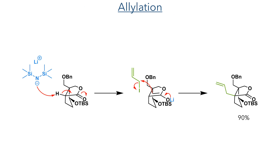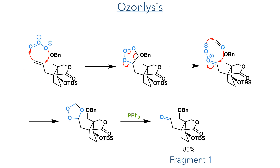In the next reaction, an enolate was once again formed at this position using lithium HMDS, which then attacked allyl iodide to form the product in a 90% yield. With this alkene in place, it was then subject to an ozonolysis reaction. Ozone undergoes a [3+2] cycloaddition to the alkene forming a trioxolane ring, which then undergoes cycloreversion and recombination to form a molozonide. This reacts with triphenylphosphine, reducing it to form an aldehyde and completing the synthesis of Fragment 1 in an 85% yield.